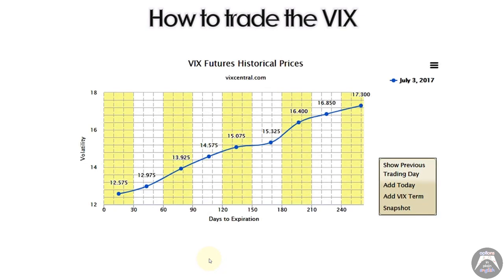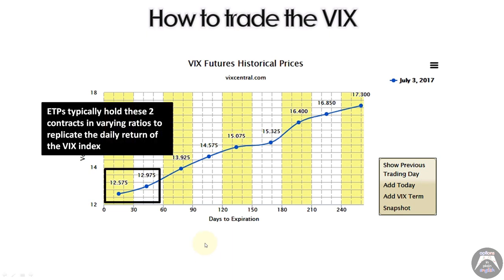Before we do that, we're going to take a look at contango. We talked about backwardation, where the front month is at a higher level than subsequent months. Now if we have the front month and then the back month being higher than the front, and each later month being higher than the previous — that situation is called contango, which is the opposite of backwardation.